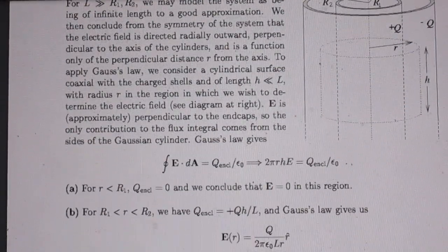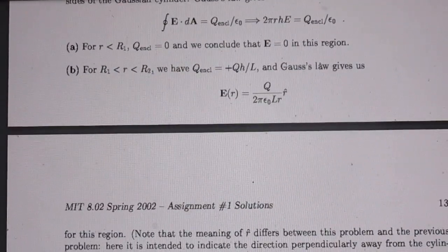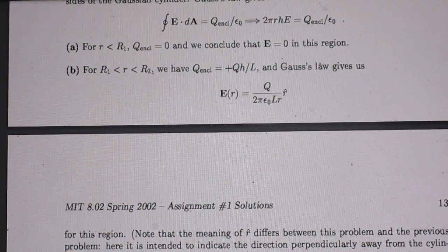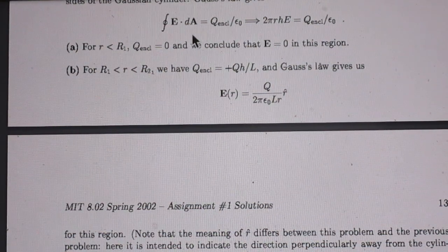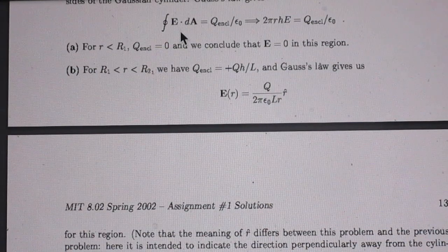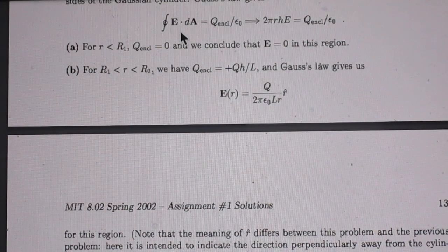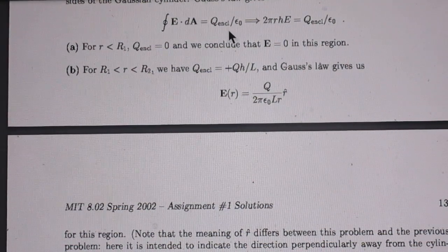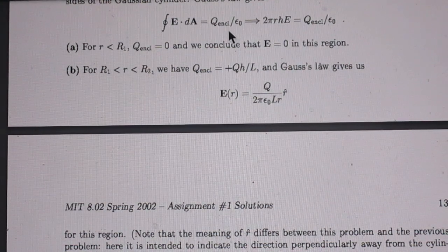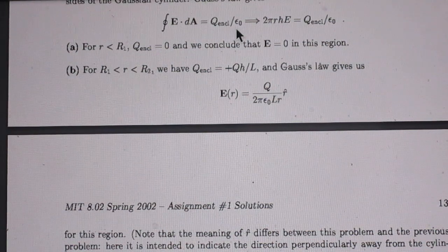So Gauss's law gives you in principle all the answers. The closed loop integral of E dot dA, that is the surface, is the enclosed charge divided by epsilon zero.